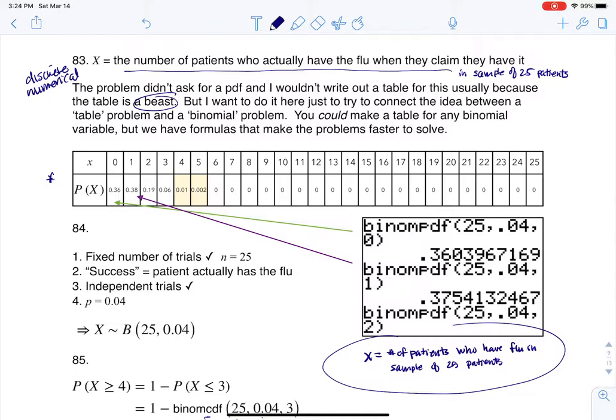We want to check if it's binomial. The first thing we need to check is: do I have a fixed number of trials? And I do—I'm going to talk to 25 patients. We're going to deem a 'success' meaning the patient actually has the flu.